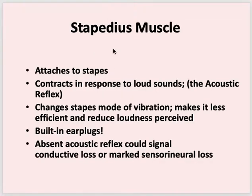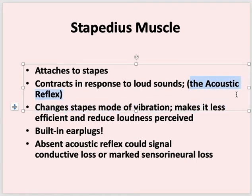There is a muscle in the ear called the stapedius, which attaches to the stapes. Its function is that whenever there is a loud sound, it contracts — this is called the acoustic reflex. It changes the stapes' mode of vibration, making it less efficient and reducing the loudness perceived. You can think of them as built-in ear plugs that protect you from loud sounds.